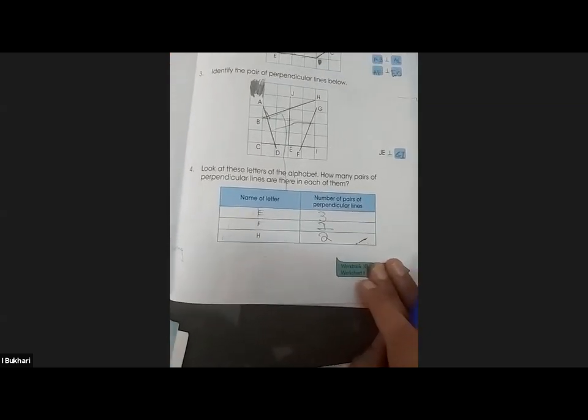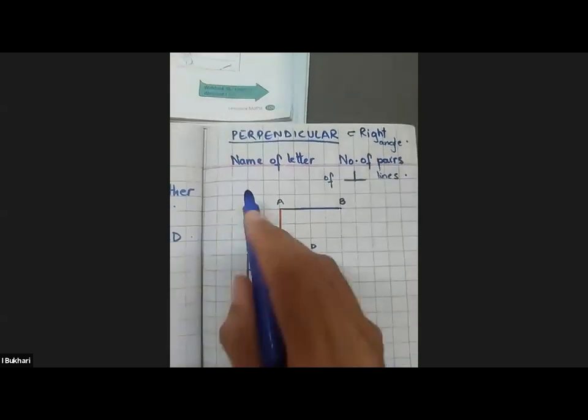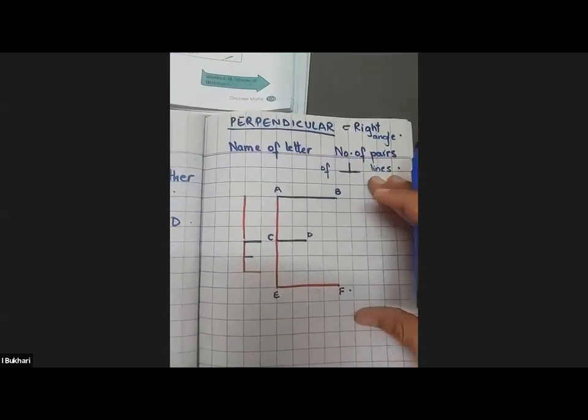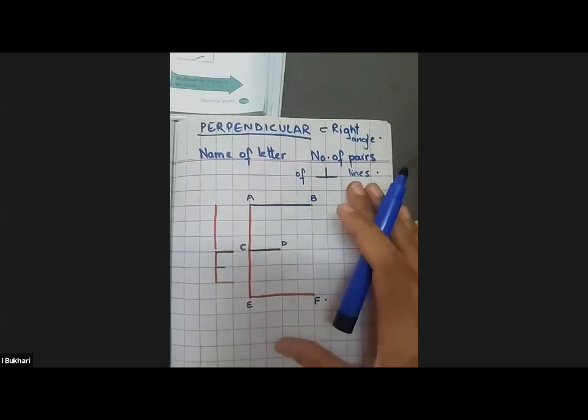What is this question asking us? 'Look at these letters of the alphabet. How many pairs of perpendicular lines are there in each of them?' I hope all of you know the meaning of the word perpendicular. It's just a fancy name for right angle — it just means right angle. No need to get scared by this big, lengthy word. Perpendicular just means right angle. Now, I drew a big E because I want to find out the pairs of perpendicular lines in this letter E.